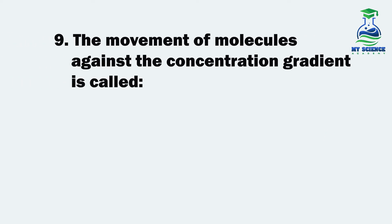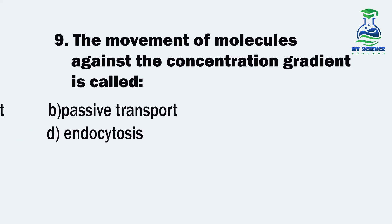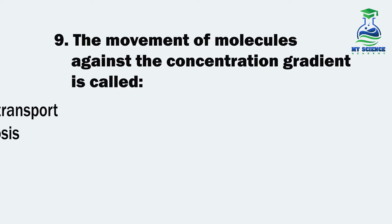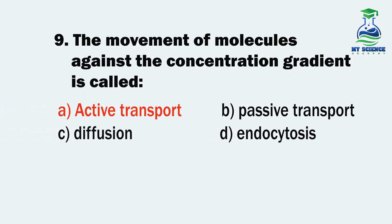Question 9. The movement of molecules against the concentration gradient is called: A. Active Transport, B. Passive Transport, C. Diffusion, or D. Endocytosis. Let us see what is the correct option. It's A. Active Transport.